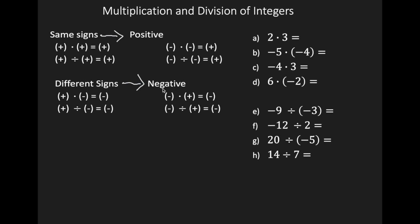Let's take a look at some examples. In example A, we have positive 2 times positive 3. This looks like normal elementary math — 2 times 3 is 6, so your answer is a positive 6.